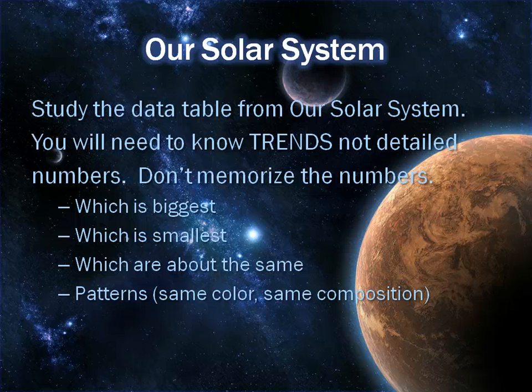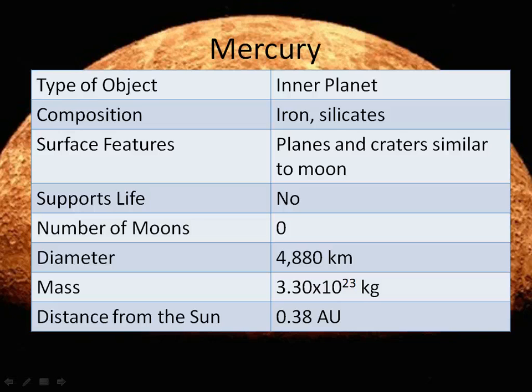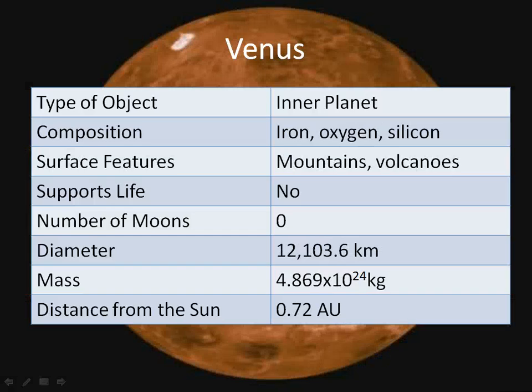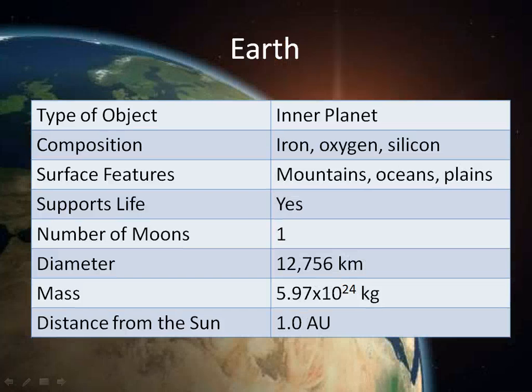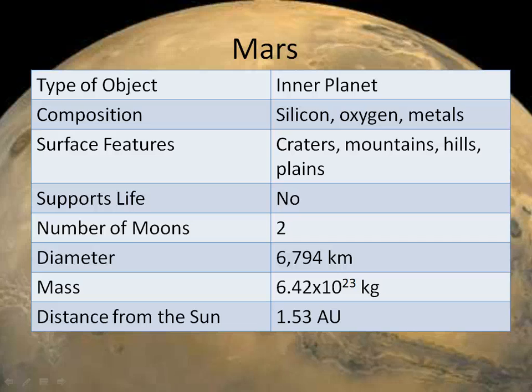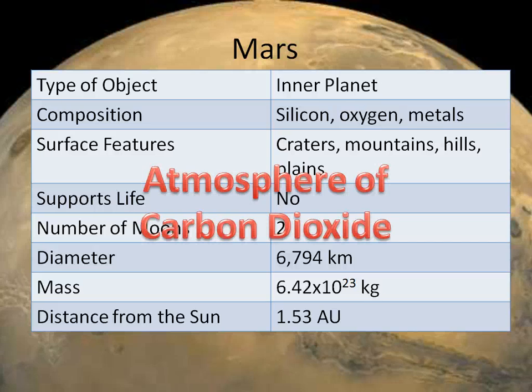I'm not going to go through everything on these slides. If you need to update some information in your data table, just pause the video and get it off of there. Let's look at Mercury — it does not have any moons and does not support life; it's also very, very small. Venus has the runaway greenhouse effect but is very similar to Earth — it has a diameter of about 12,000 kilometers, and Earth is about 12,000 kilometers as well. For Mars, it does have two moons — very important — and has an atmosphere of carbon dioxide.